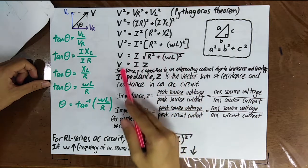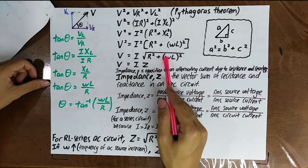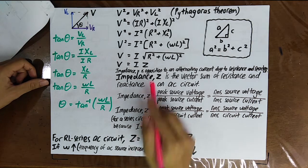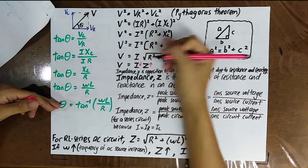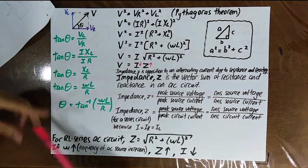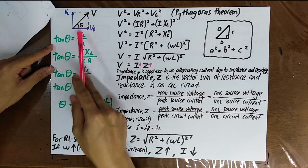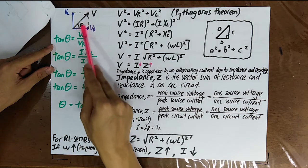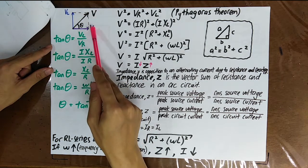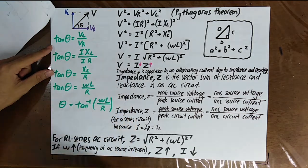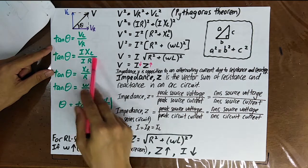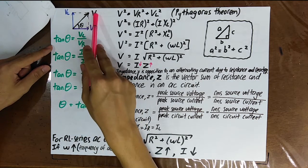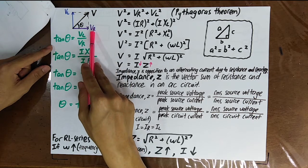You have derived Z = √(R² + (ωL)²). When ω increases, Z increases, and when Z increases, I decreases when V is constant. The phase angle between V and VR is θ, where tan θ = VL/VR = IXL/IR = XL/R, allowing you to find the phase angle between source voltage V and VR.